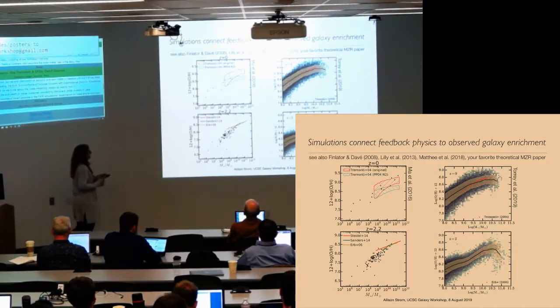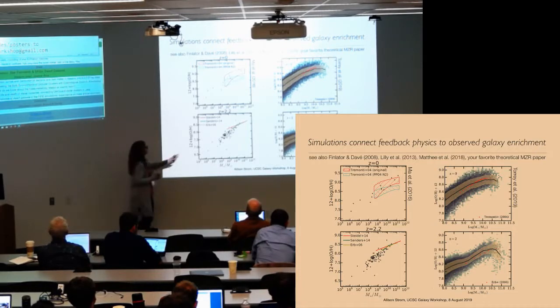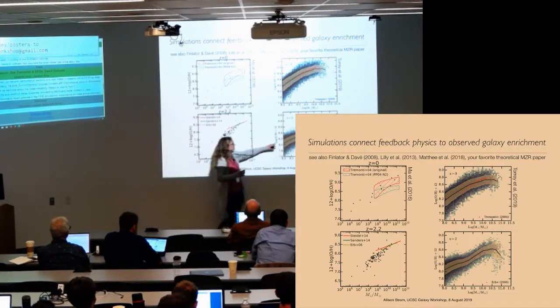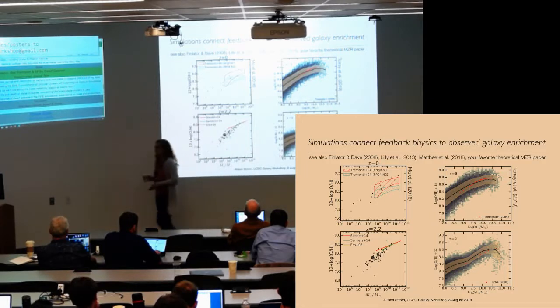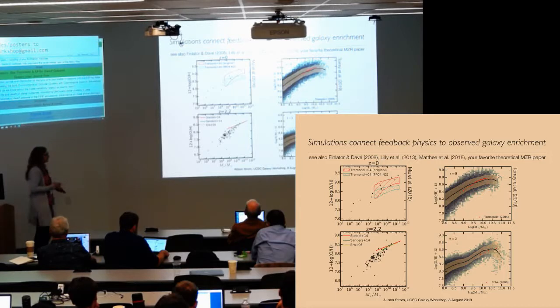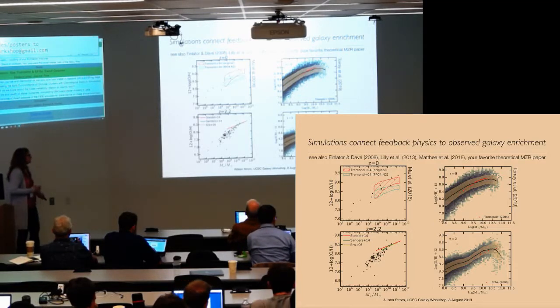What you might notice is there's a pretty, things look pretty good between the data and the simulations, but there are definitely some issues. In particular, I think you'll notice that the slopes are pretty different between the data, which is here red, and the simulations. And so the reason for this might be that there's something wrong with the simulations, but I would argue that we are also still struggling to know if we're actually measuring oxygen abundance correctly at all redshifts in a way that makes it easy for simulators to make these kinds of comparisons.